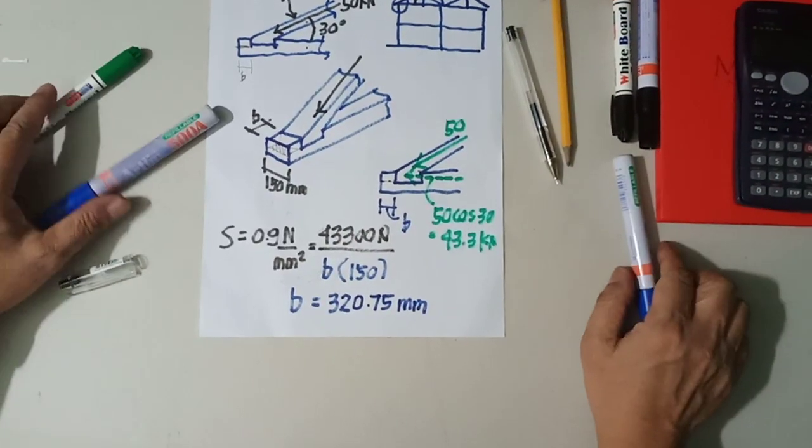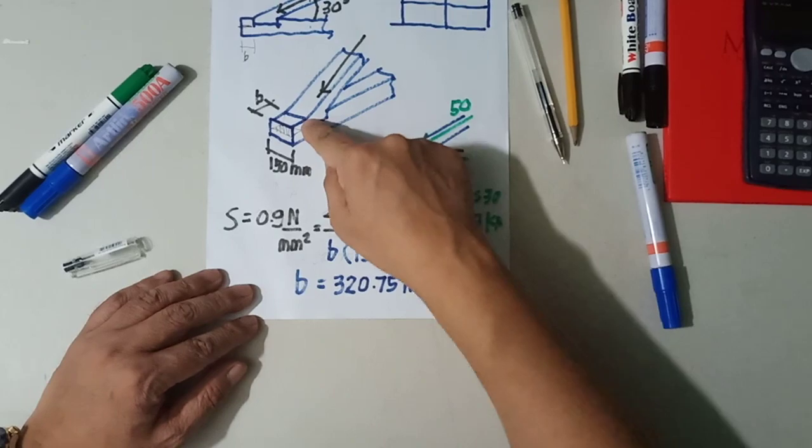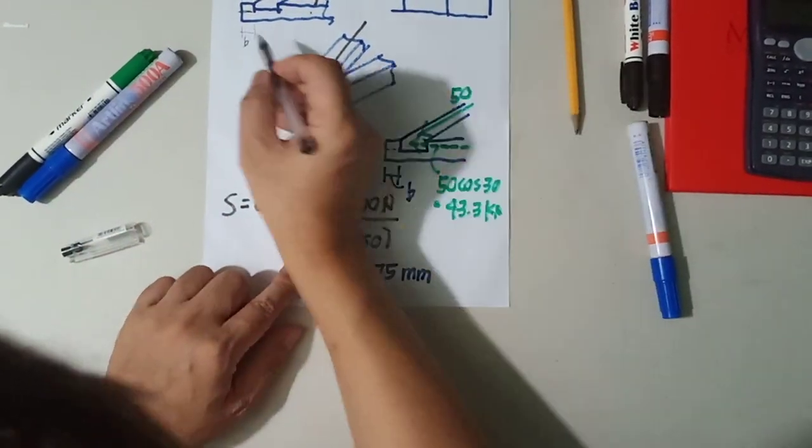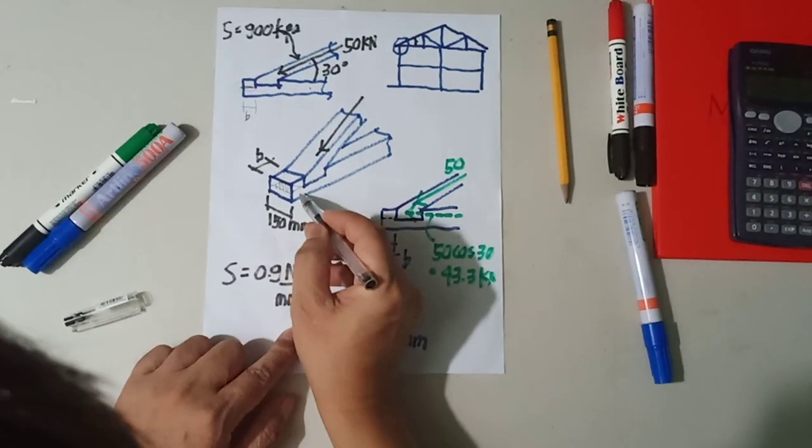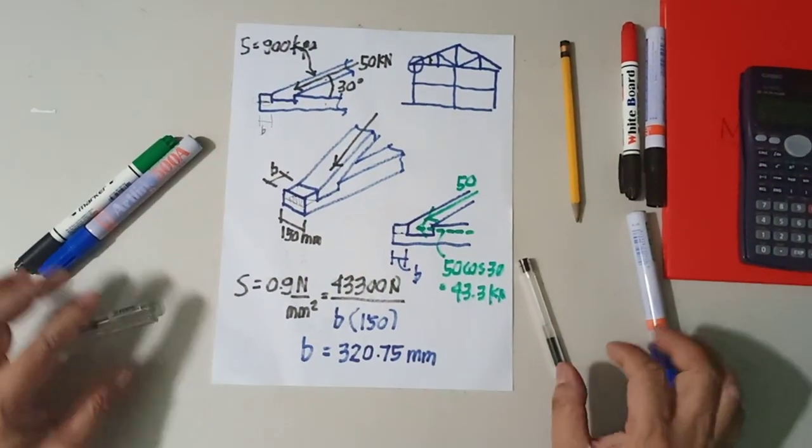So that is how that problem was solved. Remember the top chord is going to have a horizontal component that will slide side of this area, this particular area of your bottom chord. Thank you.